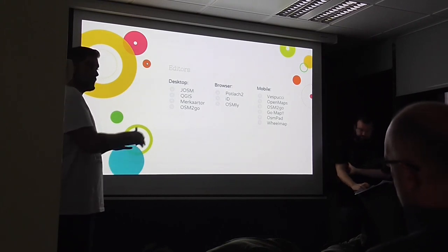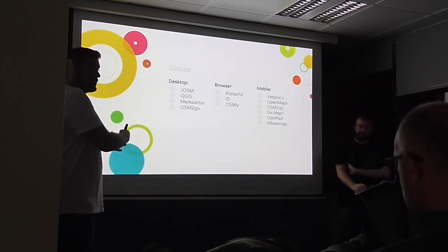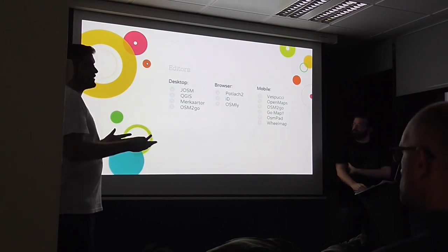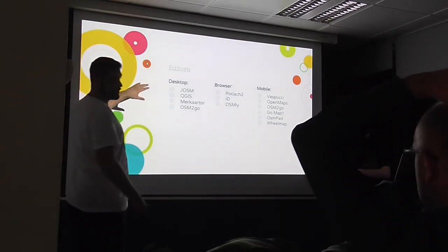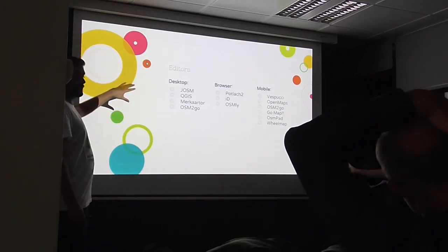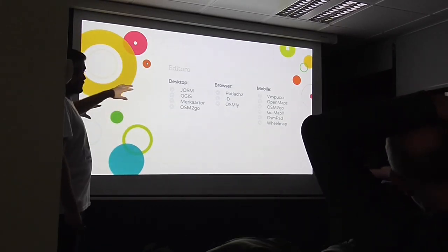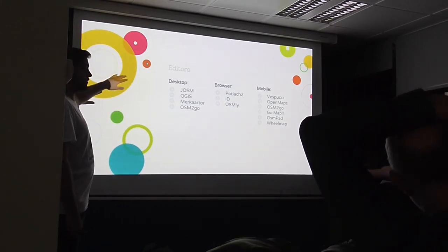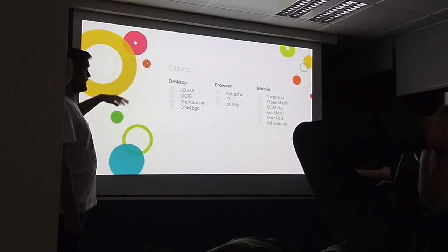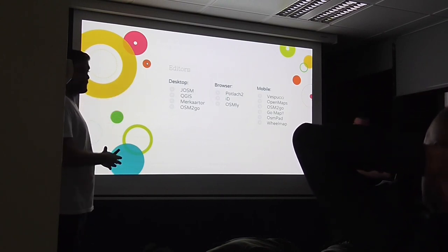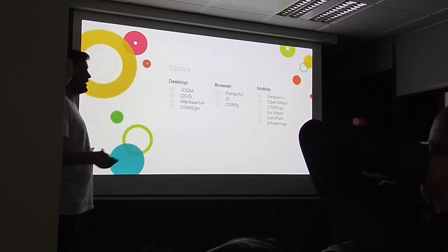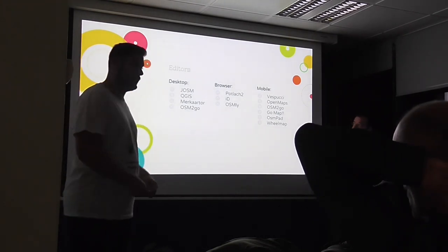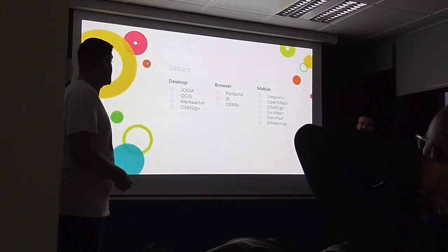All the data is collected in one place. OpenStreetMap is not the map image or the tiles you see — it's the database. So you can create any map you want from that data.